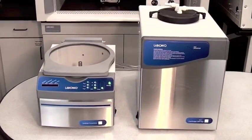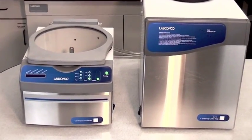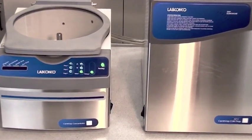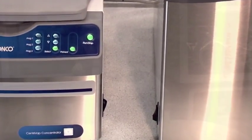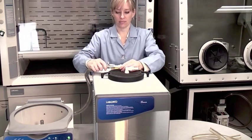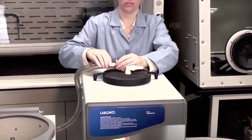Next, place the cold trap next to the Centravap. Allow a minimum of 3 inches of air space on each side of the cold trap to prevent restriction of airflow. Attach the hose from the Centravap to the cold trap connectors.